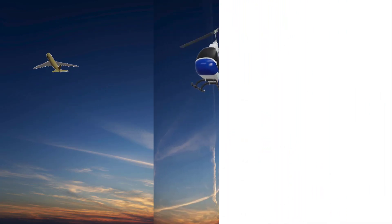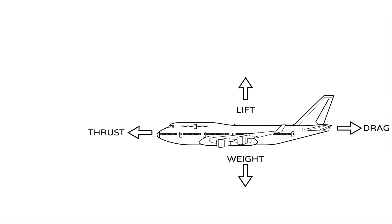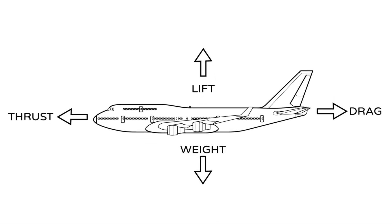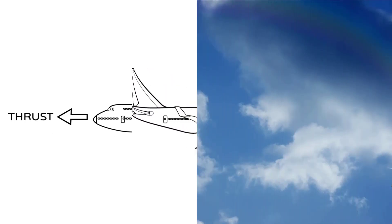It is much easier to describe and understand the four forces of flight using the example of an airplane. We will first use an airplane to describe these forces before returning to quadcopters to explore their similarities and differences. To comprehend how a flying machine operates, it is essential to understand these forces and how they are controlled in various types of flying machines.